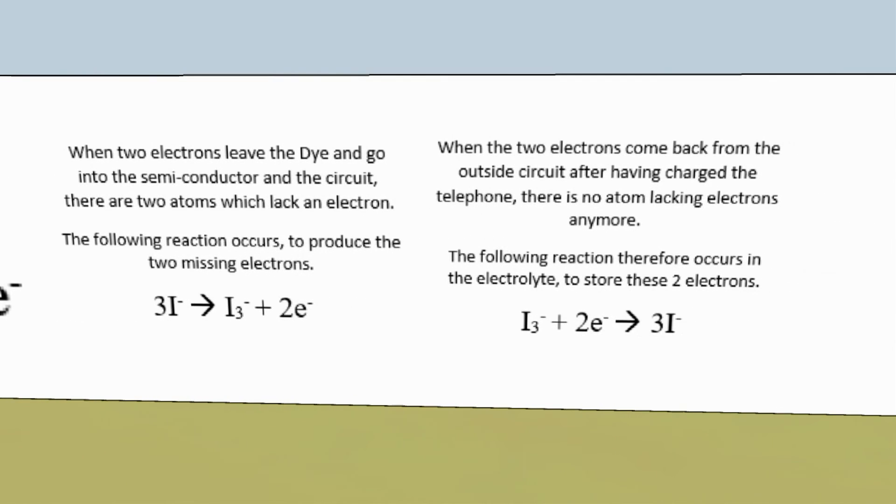When the two electrons come back from having charged the phone, therefore passing through the cathode, there is no longer any atom lacking any electrons. Therefore, the opposite reaction occurs and a triodide combines with two electrons, becoming three iodide ions. This allows the electrolyte to store these two electrons.